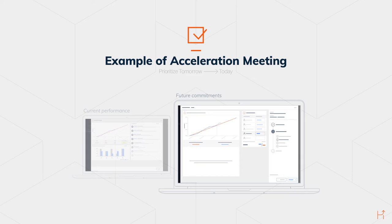Following this, it's time to take each team member's commitments for the coming week. How many interviews will each team member book to reach the weekly key activity goal of five? When all team members have made their commitments, it's time to summarize the meeting and then get back to accelerating.